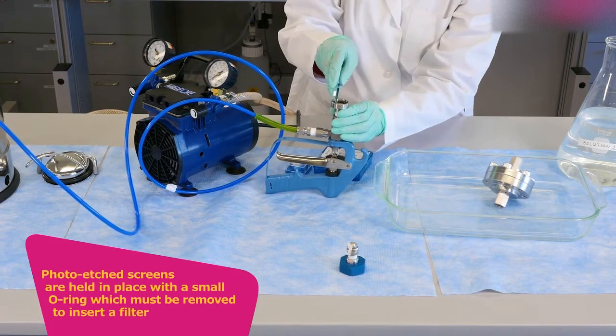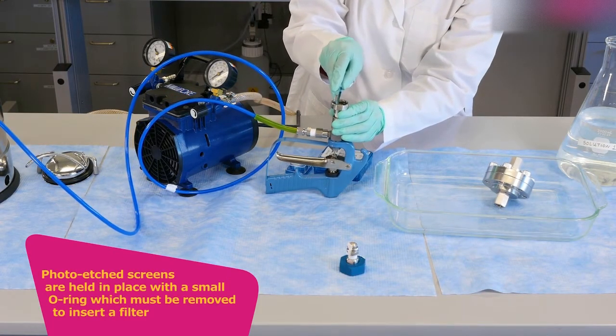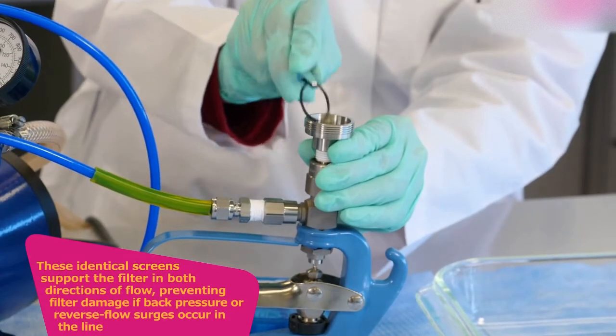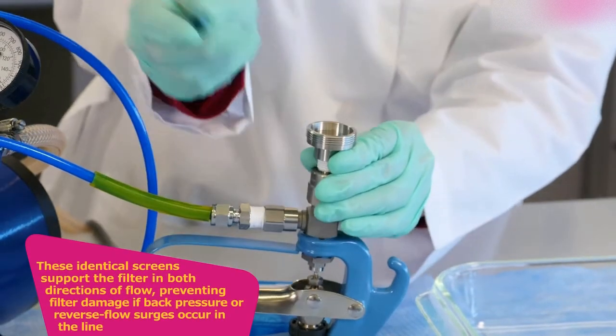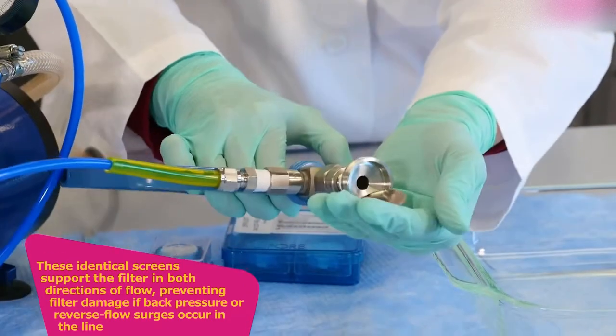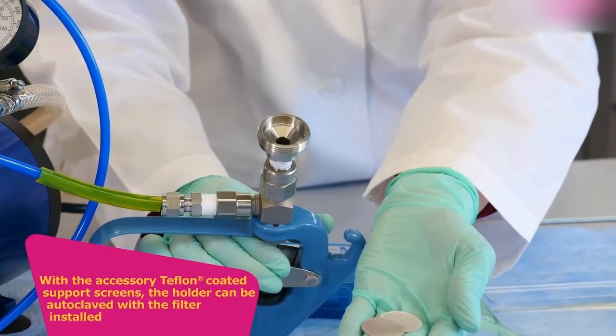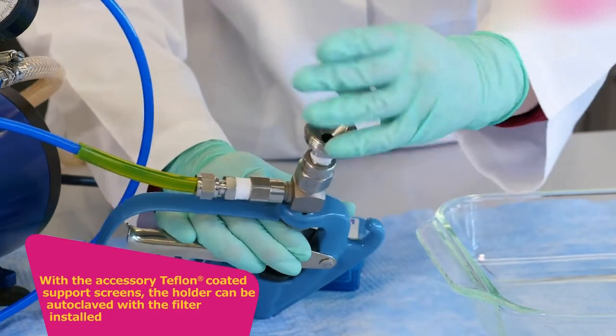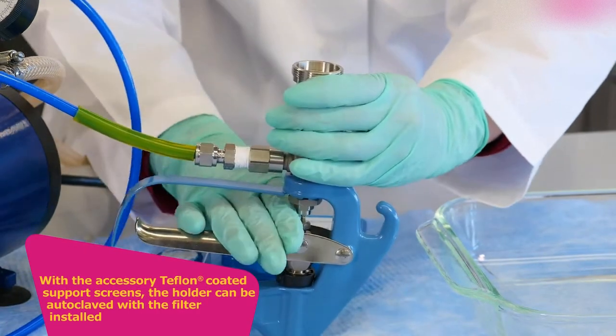Photo etched screens are held in place with a small O-ring, which must be removed to insert a filter. These identical screens support the filter in both directions of flow, preventing filter damage if back pressure or reverse flow surges occur in the line. With the accessory Teflon-coated support screens, the holder can be autoclaved with a filter installed.